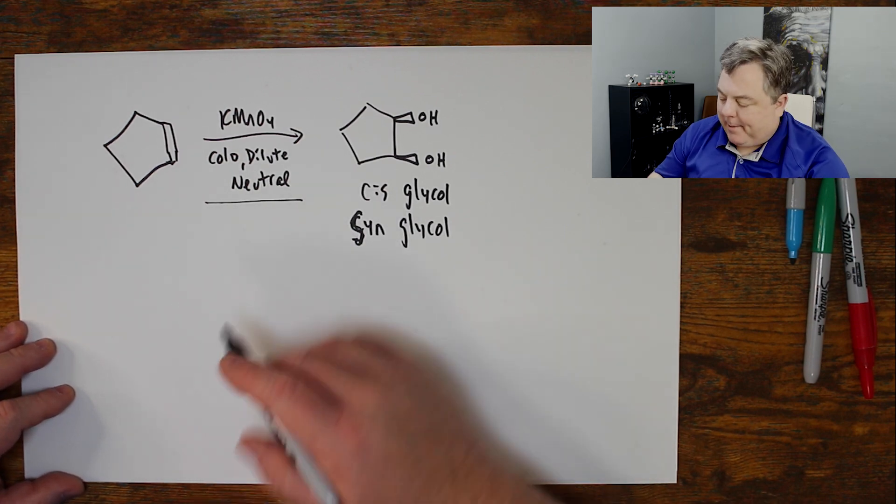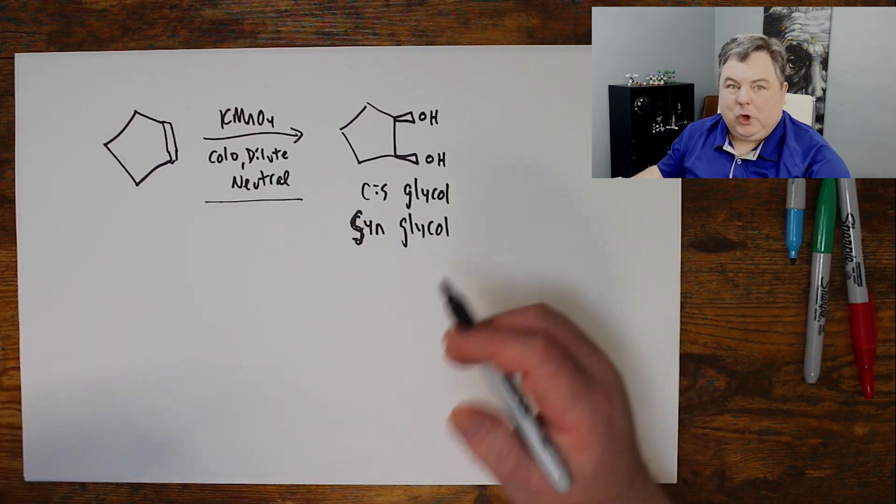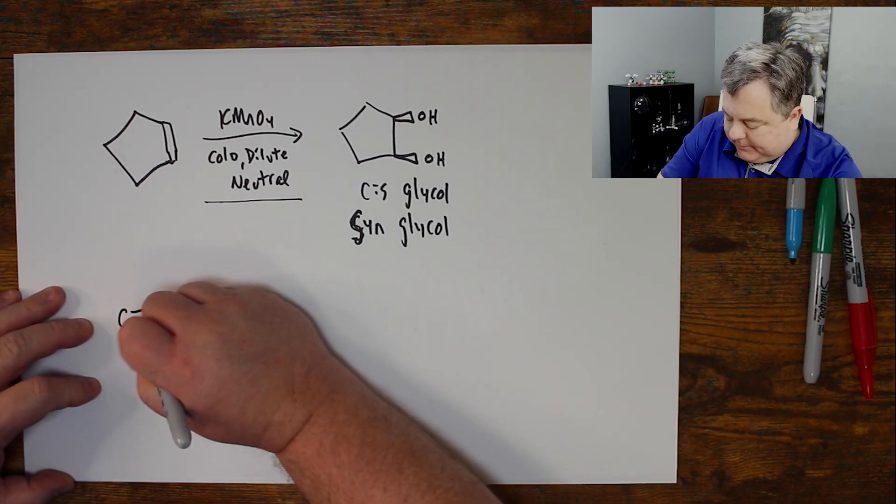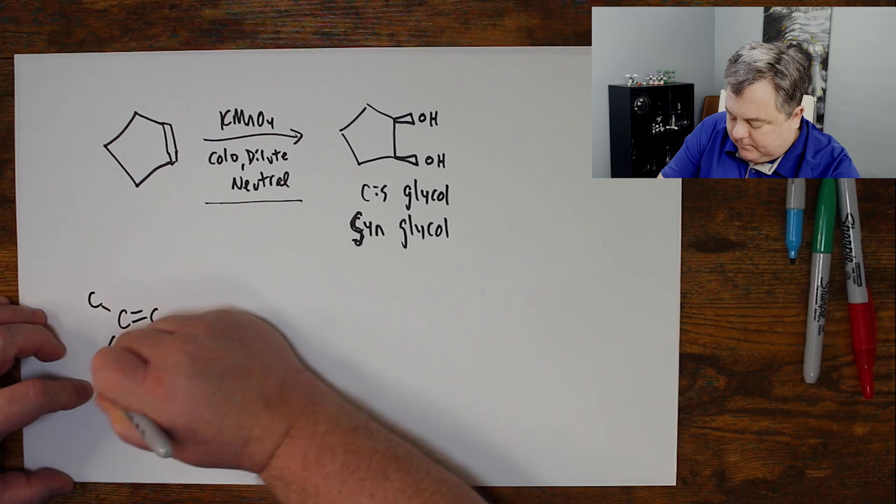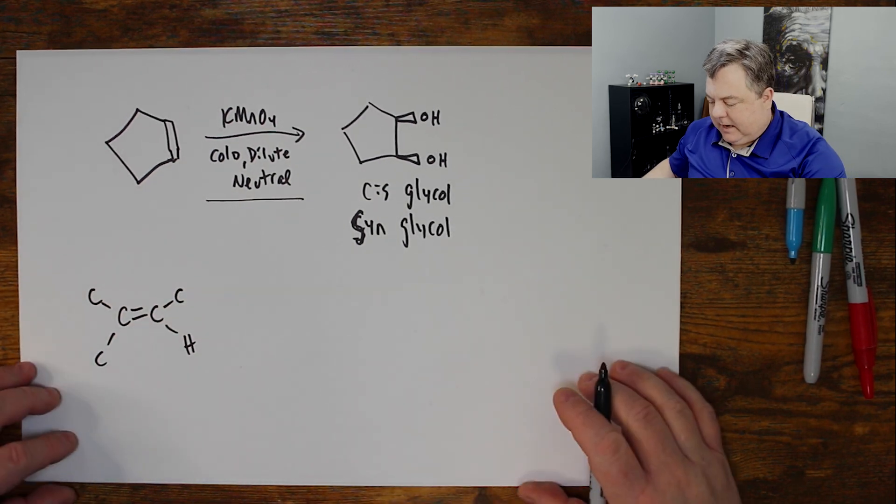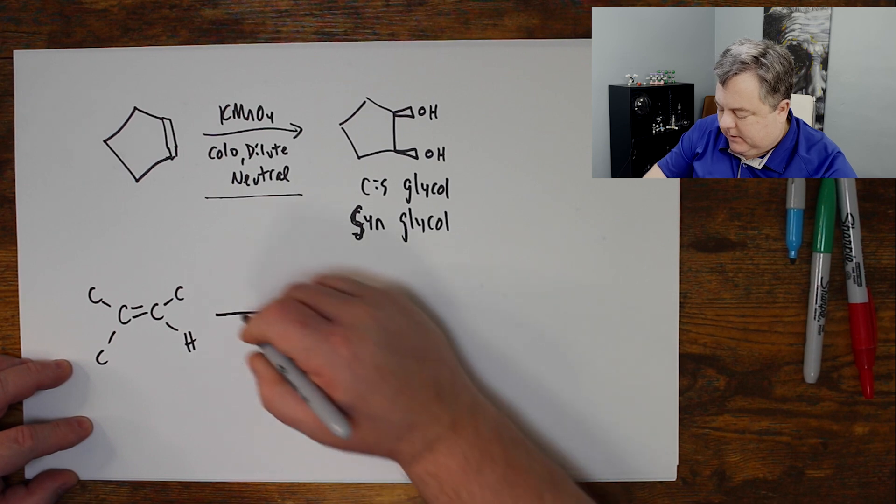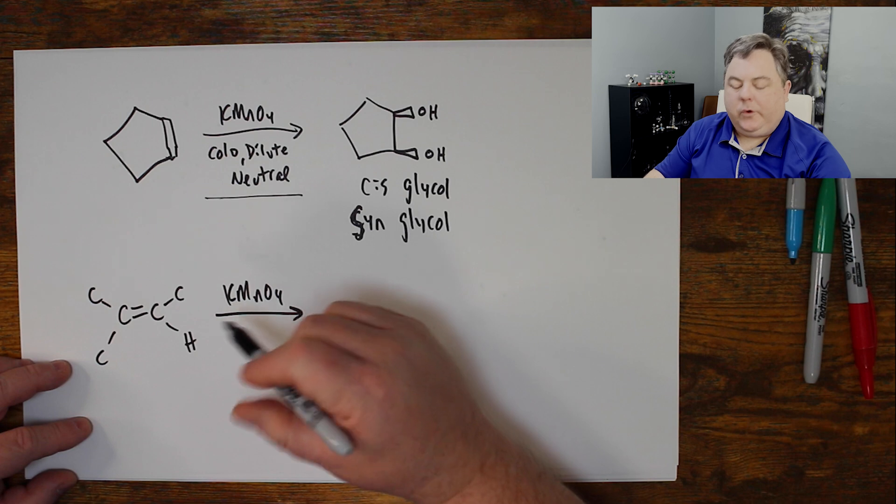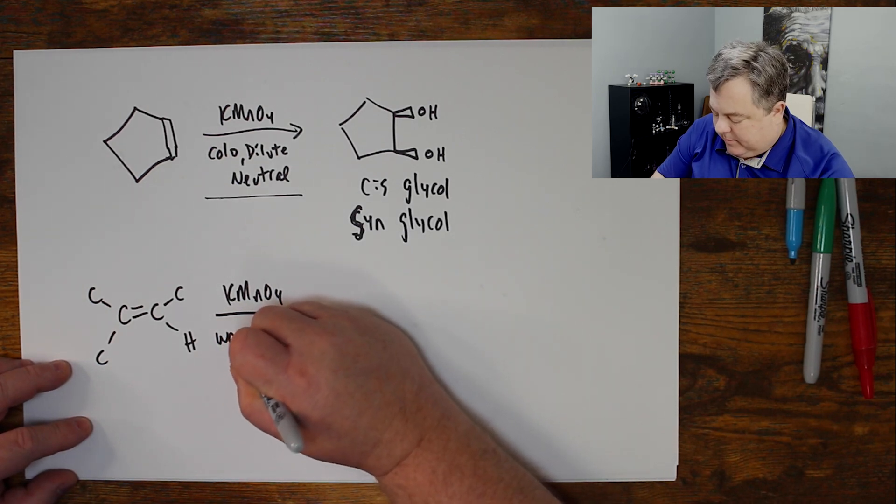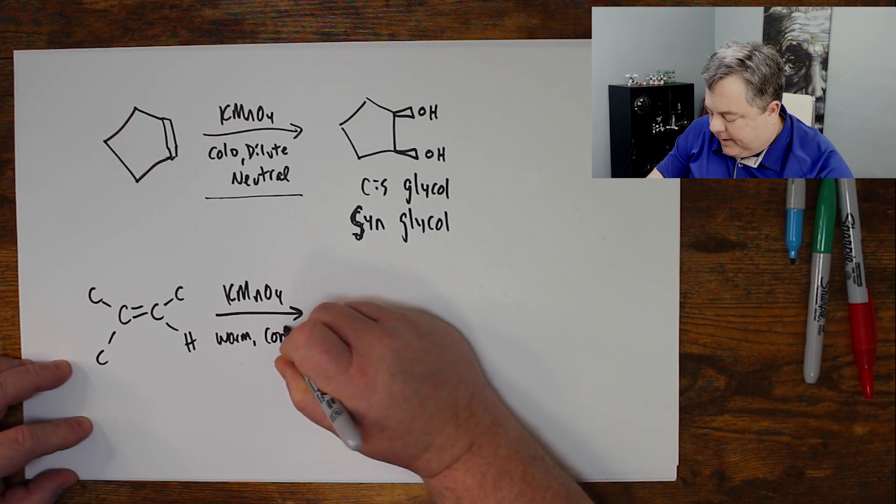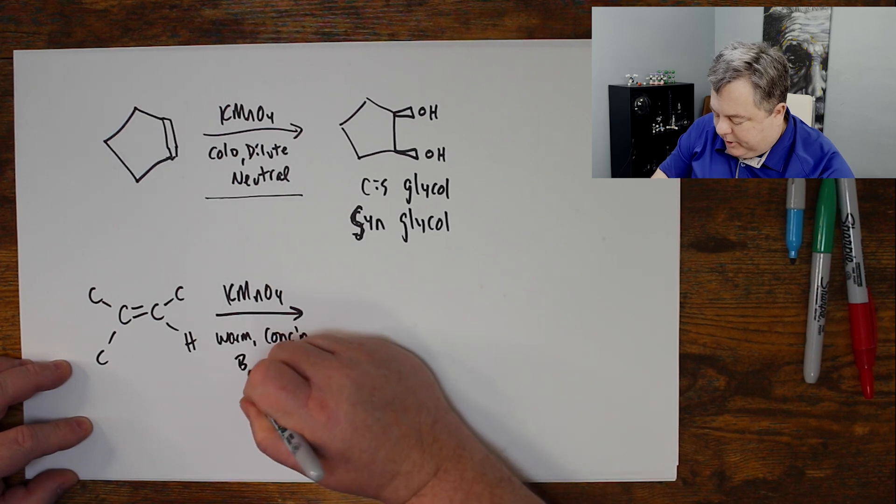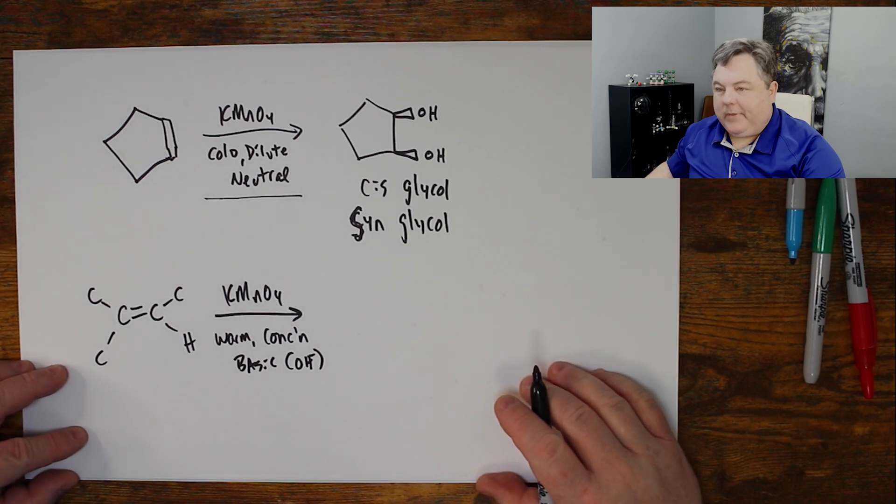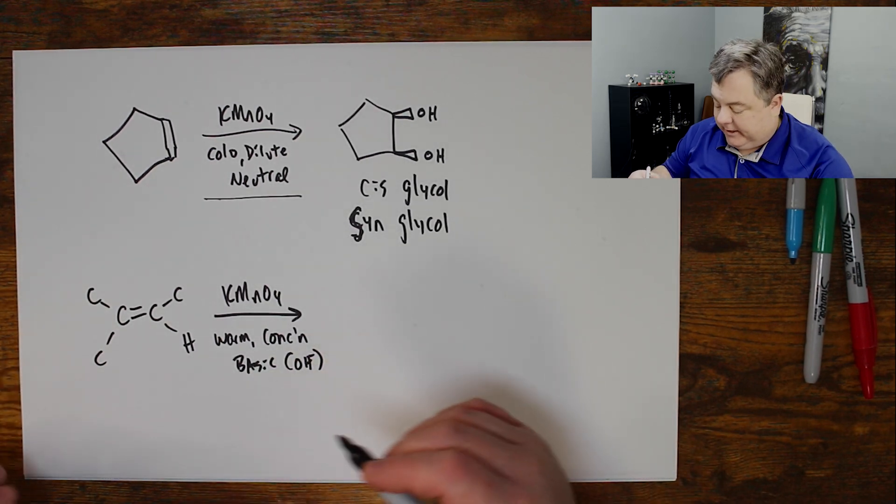Okay, so that's when it's cold and dilute. What happens if I let it get a little more concentrated? Warm, concentrated, or basic? Let's make it lopsided. I'm going to add my potassium permanganate. But instead of cool, dilute, and neutral, I'm going to let it get warm, maybe concentrated, and maybe put a basic solution together with some hydroxide in there. These help it go more aggressively and keep going.